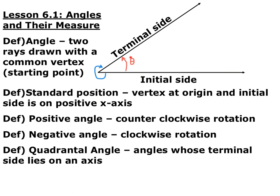If we go counterclockwise, that's a positive angle measurement. If we go clockwise, that's a negative angle. Now that we're getting into trigonometry, we usually call angles theta or some other Greek letter.